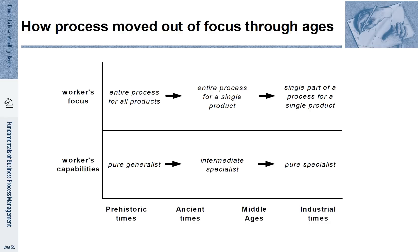In industrial times, this picture had changed. Manufacturers were taking over and they were producing for a market. The workers in these manufacturers were assigned to very small, discrete steps of the process. In this way, they became more and more specialized and responsible for smaller and smaller pieces of work. We have seen such an example in Adam Smith's discussion of the pin-making process.